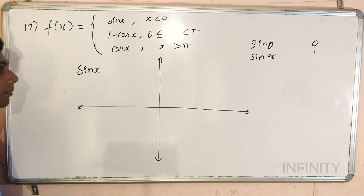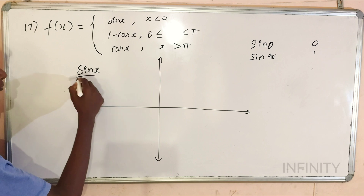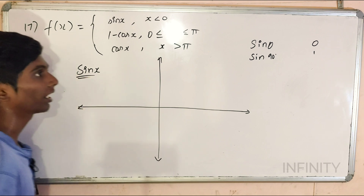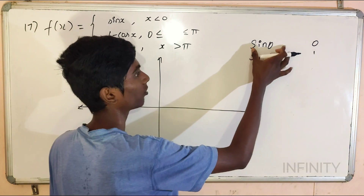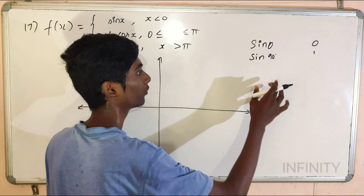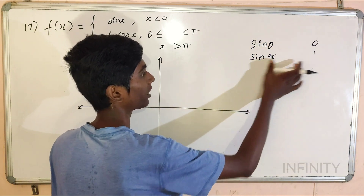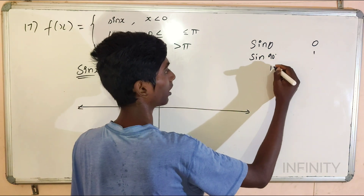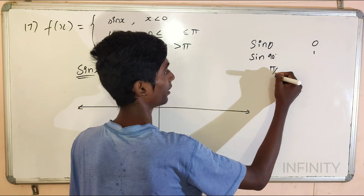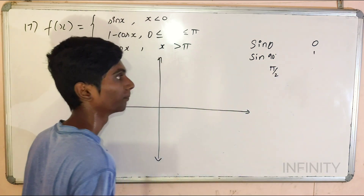First, we have sin x. Let's start. Sin 0 is equal to 0. Sin 90 is equal to 1. So, how do we say sin 90? We say pi by 2.